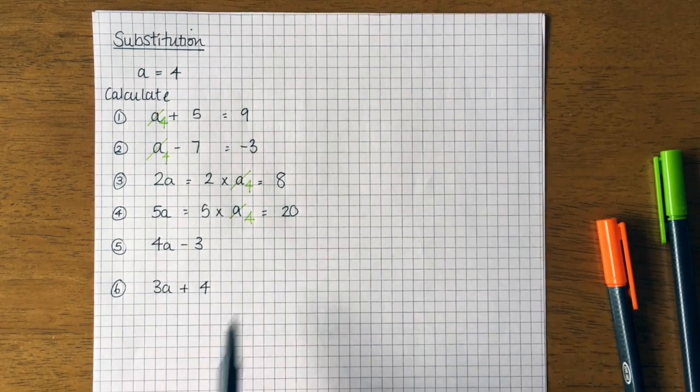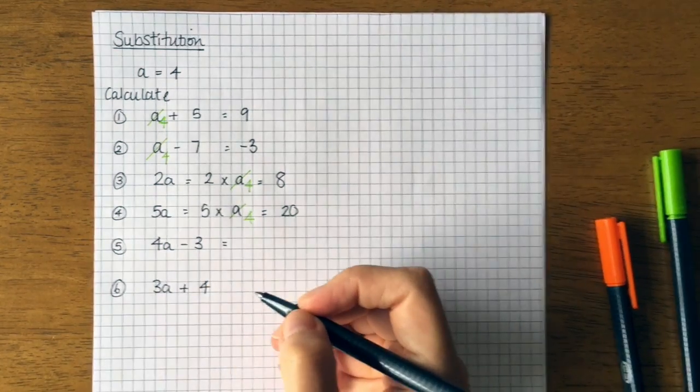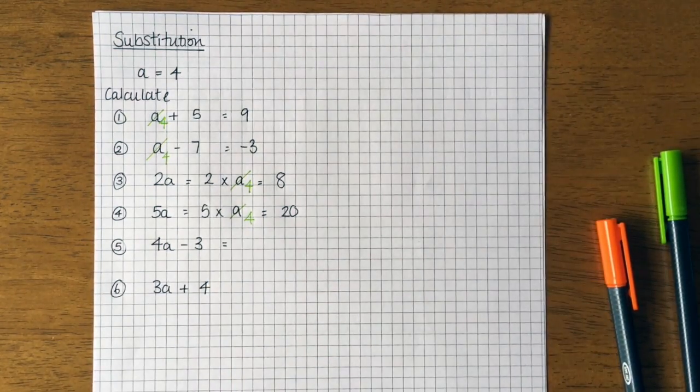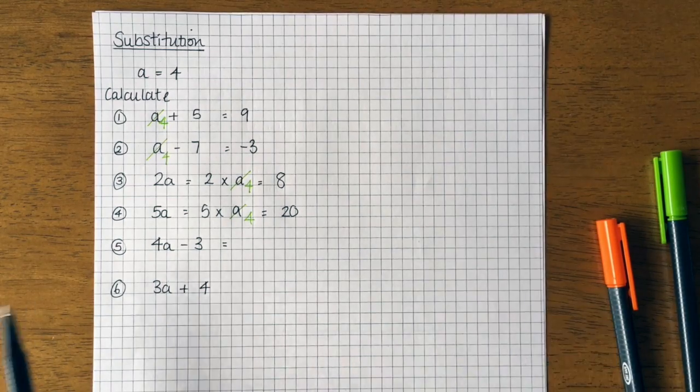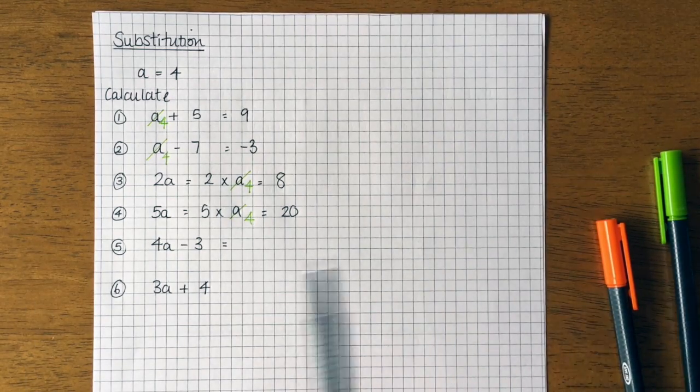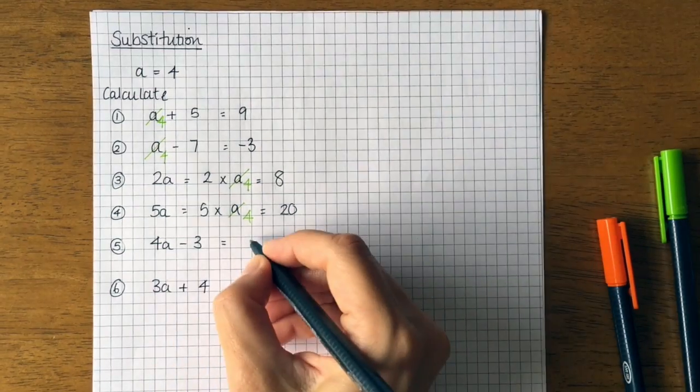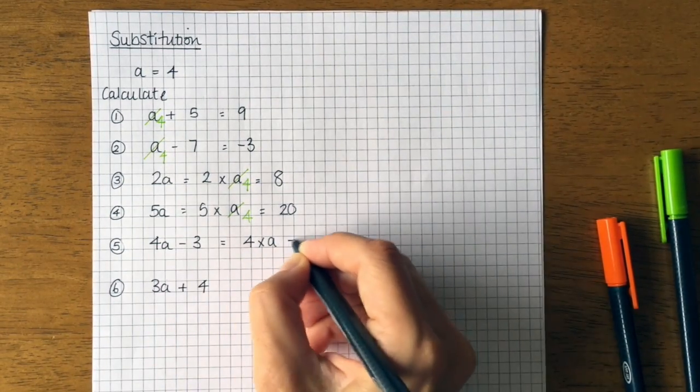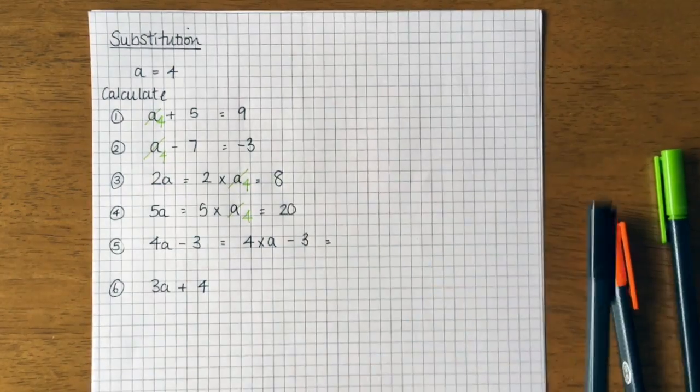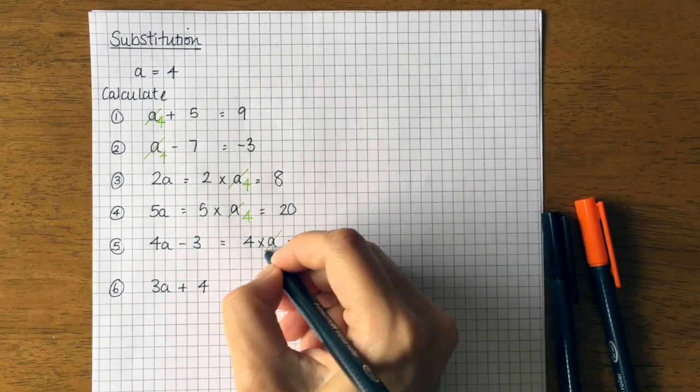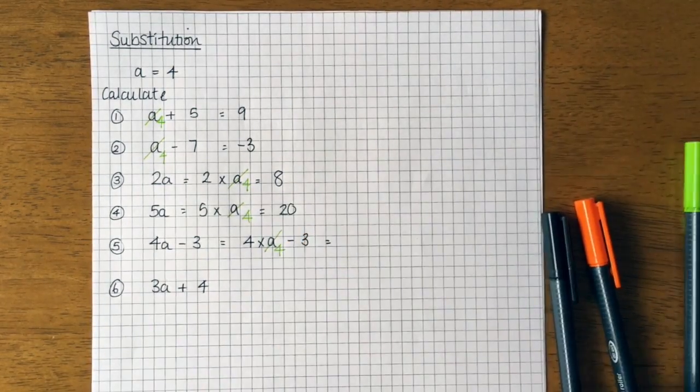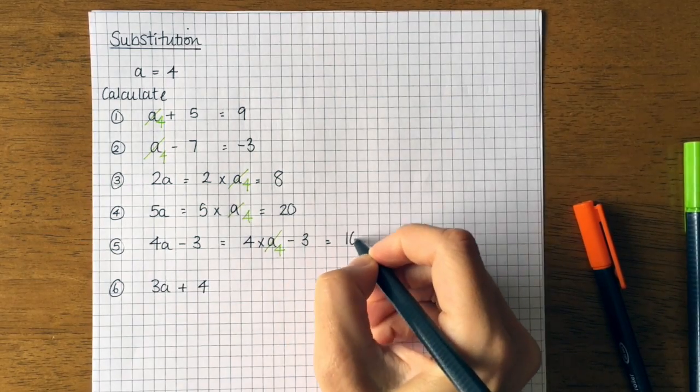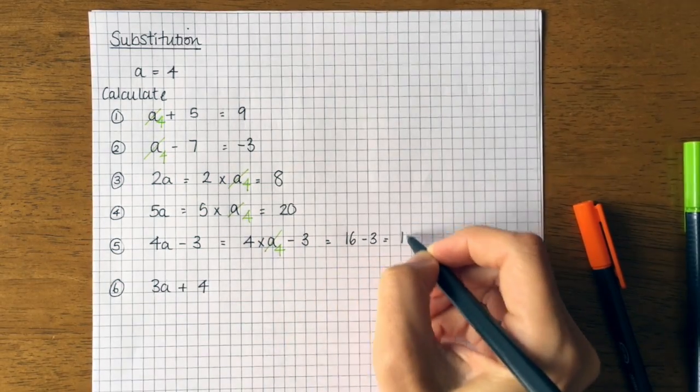The next one we've got one extra step. We do have to think about our rules of BIDMAS, okay? But in this case they are in the right order, you just need to double check that they are. So we're gonna do four times a and we're gonna take away three. So I cross out the a, it's a four. So four times four is sixteen. Take away three gives me thirteen.